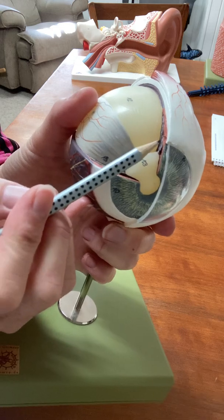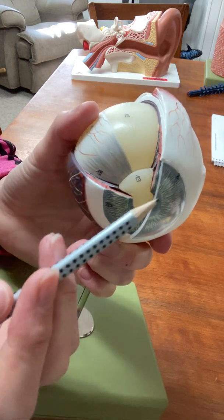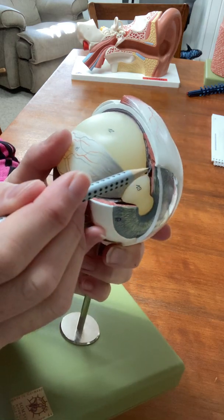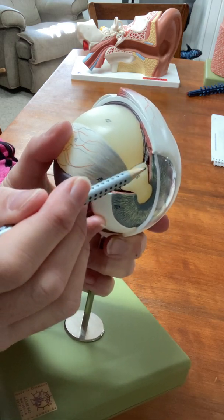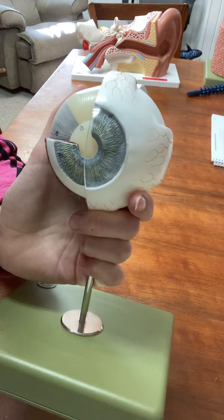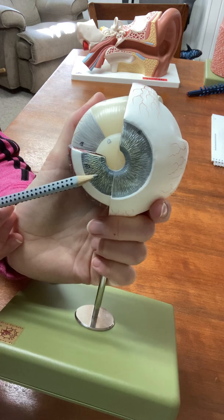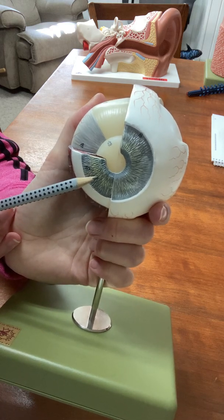This right here, this bump here, is the lens, and the lens is used to focus to see things clearly. That's the job of the ciliary body: to change the shape of the lens for focusing. And then remember we're still in the middle layer of the eye.